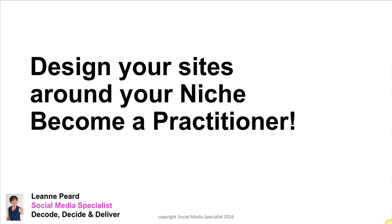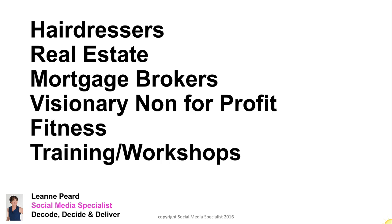Go to LinkedIn and search for real estate agents and connect with them. Find all the real estate agents on Twitter and follow them. Send them a private message — don't just be generic. Go look at their profiles, engage and talk to them. If you have no idea of what your niche would be, here are some ideas: hairdressers, real estate agents, mortgage brokers, visionary businesses, non-profit organizations, fitness industries, training and workshops. It could even be how to make crochet or train the trainer. Once you have a clear idea, stay with that market.